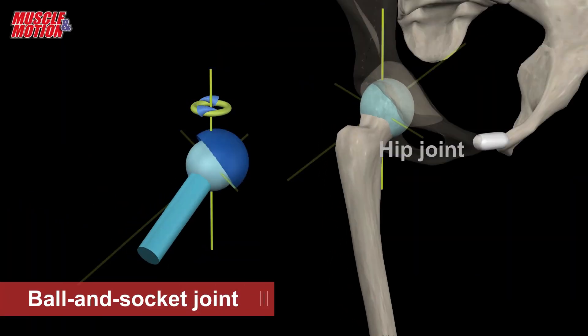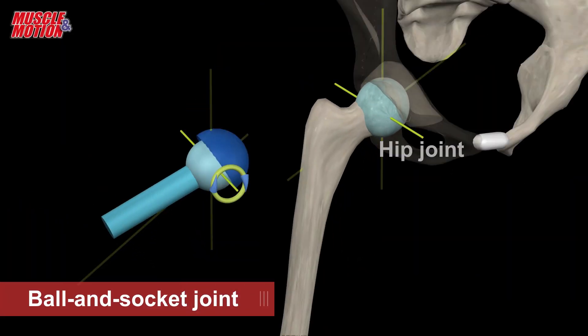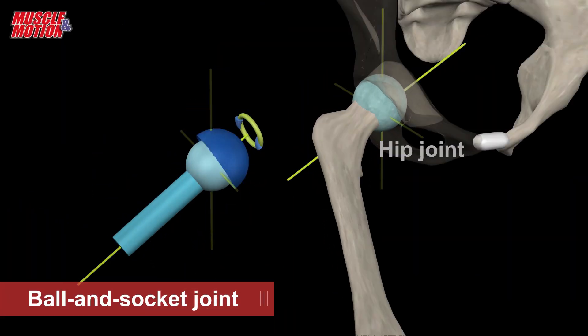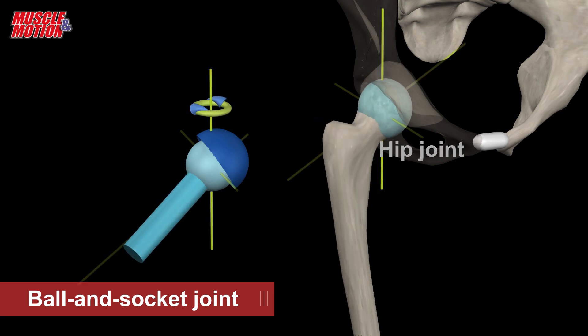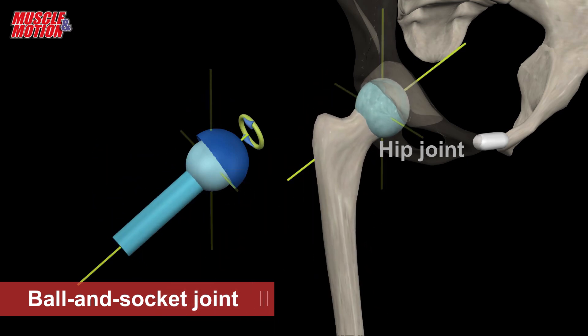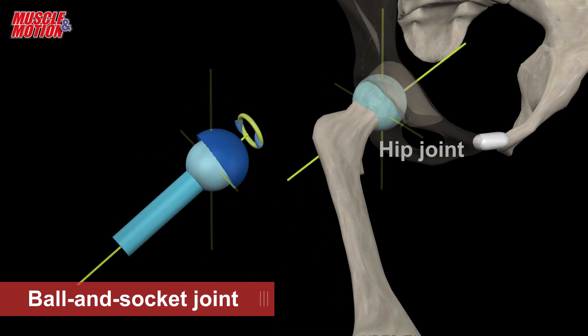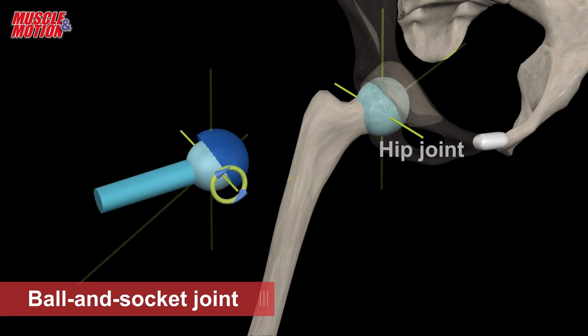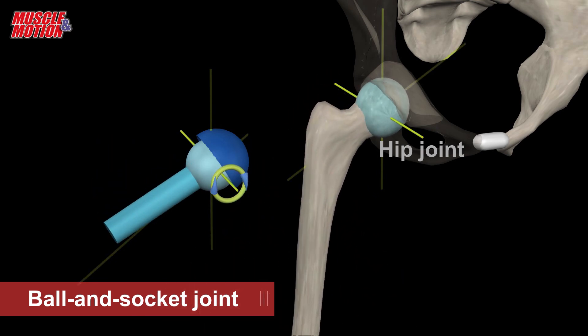Ball and socket, where the ball-shaped surface of one rounded bone fits into the cup-like depression of another bone. It permits free movement in numerous axes. For example, the hip joint.